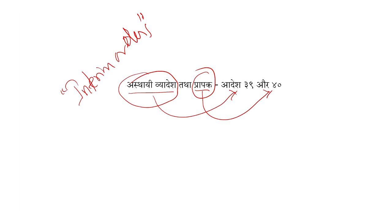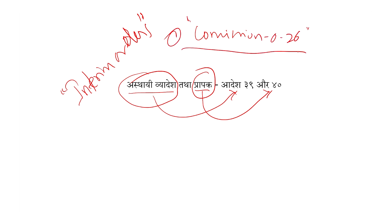This is also a member of the family — Aosthai Vyadish and Prapak. Many of us have interim orders. For example, we have a commission. The commission orders are Order 26. If you look at the commission, this is also an interim order.